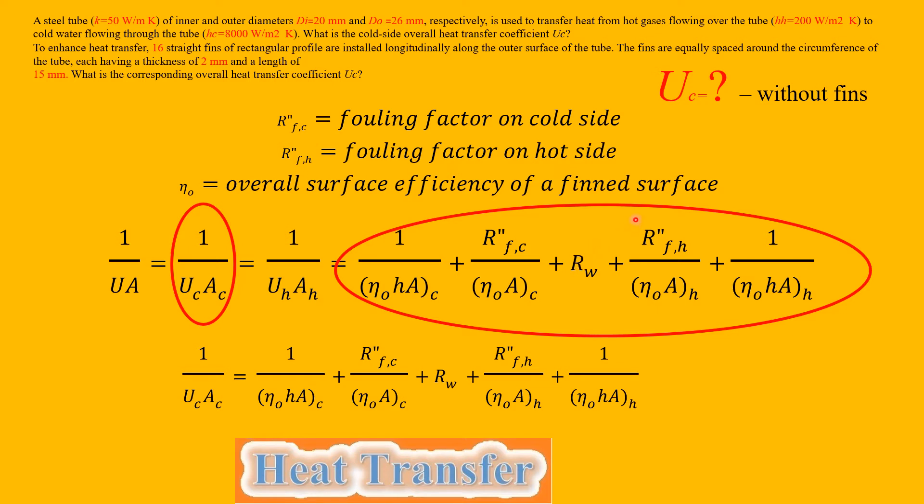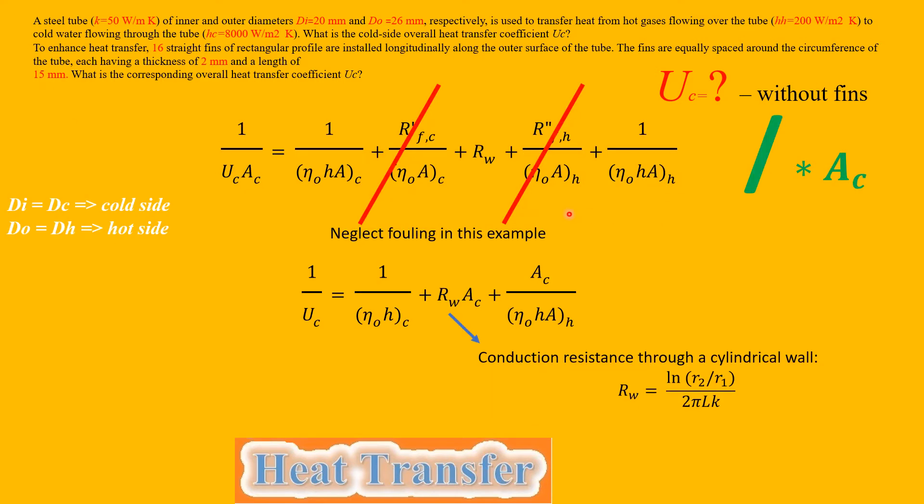Now we arrive to the hot side, so this is the fouling on the hot side and the convection on the hot side. These are our five components. Here we can see it rewritten with the two components that we don't need just thrown out. They did not give us any information for fouling, therefore we can neglect it. I'm going to multiply this formula by Ac, the area of the cold side, therefore we can reduce it and simplify it.